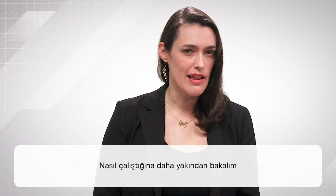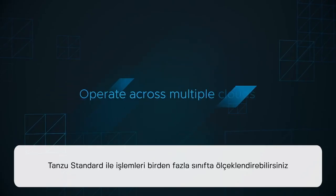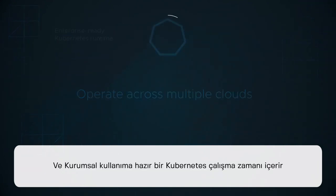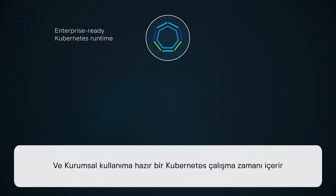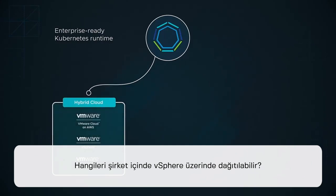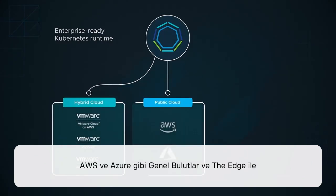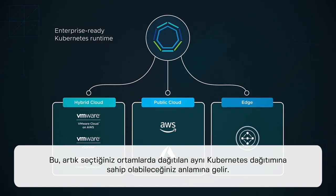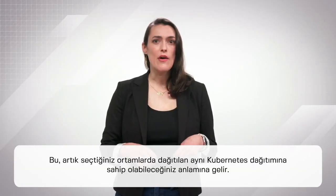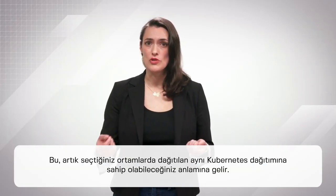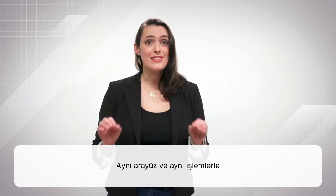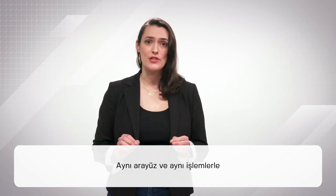Now that we've piqued your interest, let's take a closer look at how it works. With Tanzu Standard, you can scale operations across multiple clouds. It includes an enterprise-ready Kubernetes runtime, which can be deployed on-premises on vSphere, with public clouds like AWS and Azure, and at the edge. This means you can have the same Kubernetes distribution deployed across the environments of your choice, with the same interface and the same operations.